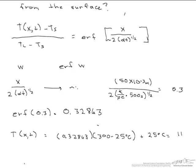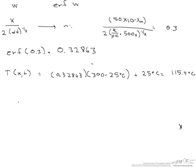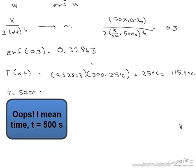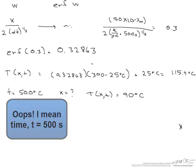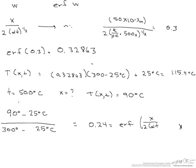What if instead you wanted to find out how deep you would go at the same time, our T equals 500 seconds, but we want to know what the X is for a temperature equaling 90 degrees C. So now the way we set it up is T, 90 degrees, minus T of the surface, 25 degrees C, divided by the initial temperature minus T at the surface, and this equals 0.24, which is now going to equal that error function of X times 2 alpha times T to the 1 half.